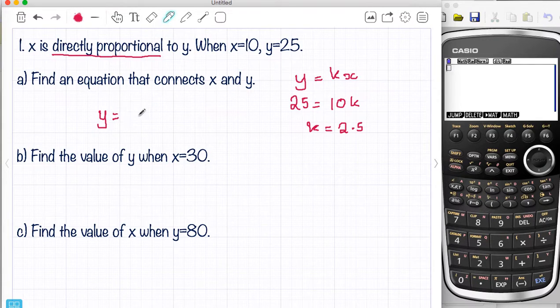And I'm going to write down Y equals 2.5X. So my K value is 2.5. Remember that X and Y are going to change. This is going to stay the same for the whole of this question.